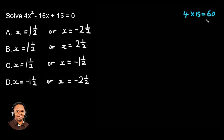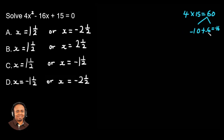So now you're going to find two factors of 60 that should give us the middle term minus 16. What are the two factors? 10 and 6 won't give us minus 16. So we use minus 10 and minus 6. These two factors, minus 10 and minus 6, are going to replace the middle term minus 16x.